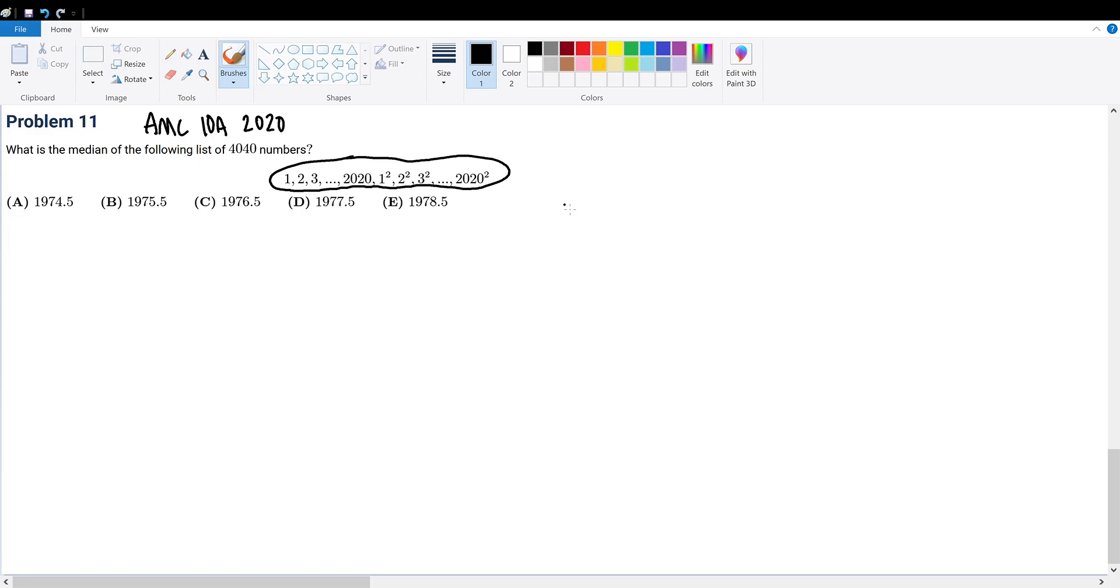So the median of this set will be a's of 2020 plus a's of 2021 divided by 2. This comes straight out of the definition for the median. It's the sum of the two middle numbers over 2.